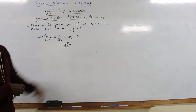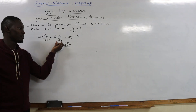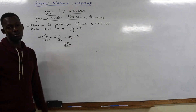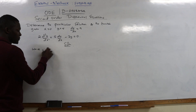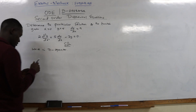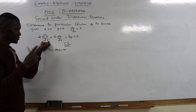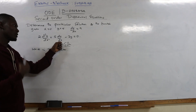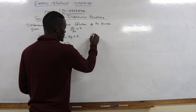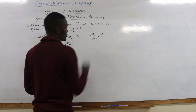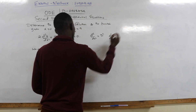We are using the D operator formula. Looking at the equation, we have the second derivative, the first derivative, and the variable y, all equaling 0. The first step is always to write it in D operator form. When you have a second derivative, you replace it with D squared. Differentiation once is replaced with D. That is the D operator method.